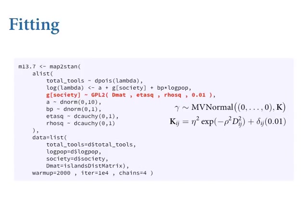After you compile this model, take a look at the Stan code — there's a function in the rethinking package called stancode. Give it the fitted model and it shows you the code actually being used to define the Markov chain. What you'll see in there is a loop that defines the covariance entries. It just iterates over all of the lower triangle of the matrix and defines them all from that function. When you want some other function, you can start with that Stan code template and put anything in there you want.